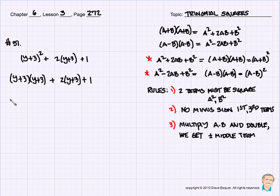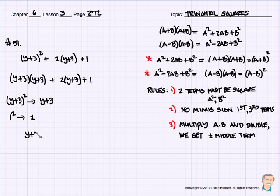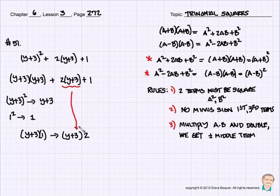Rule 1: is the first and third term a perfect square? Yes — y plus 3 squared gives me the y plus 3, and the third term, 1, squared gives me 1. Now applying rule 3: take y plus 3 multiplied by 1, that gives us y plus 3, and if we double it — multiply by 2 — we do indeed get the middle term exactly.